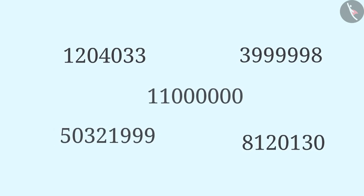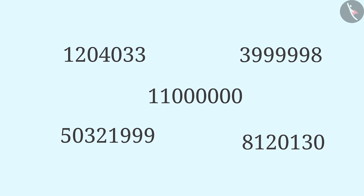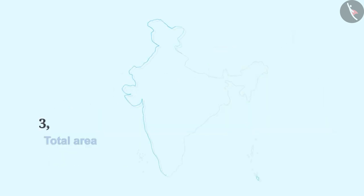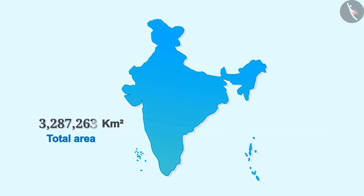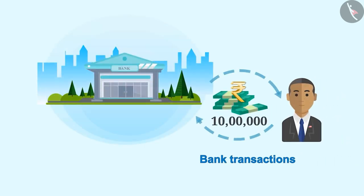Large numbers consisting of seven or eight digits prove useful to us in many ways, such as expressing the population of a city, the total area of a country, or the transactions at a bank.